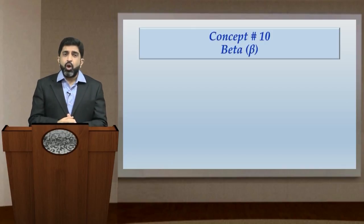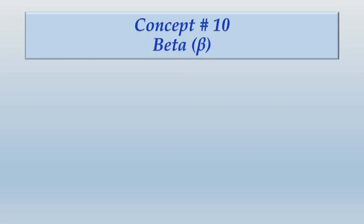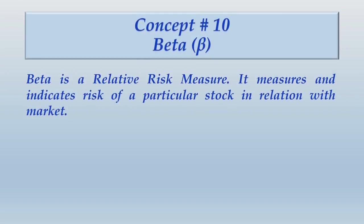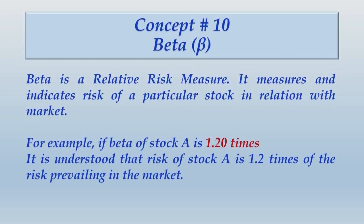Beta is a relative risk measure — it measures and indicates the risk of a particular stock in relation to the market index. For example, if beta of stock A is 1.2, it is understood that the risk of stock A is 1.2 times the risk prevailing in the market. Let us now move ahead and see how beta is measured.